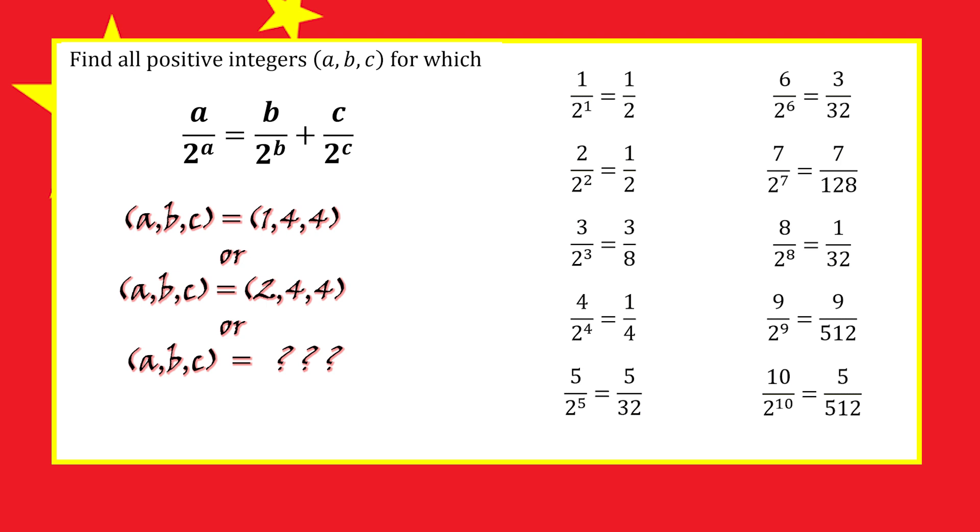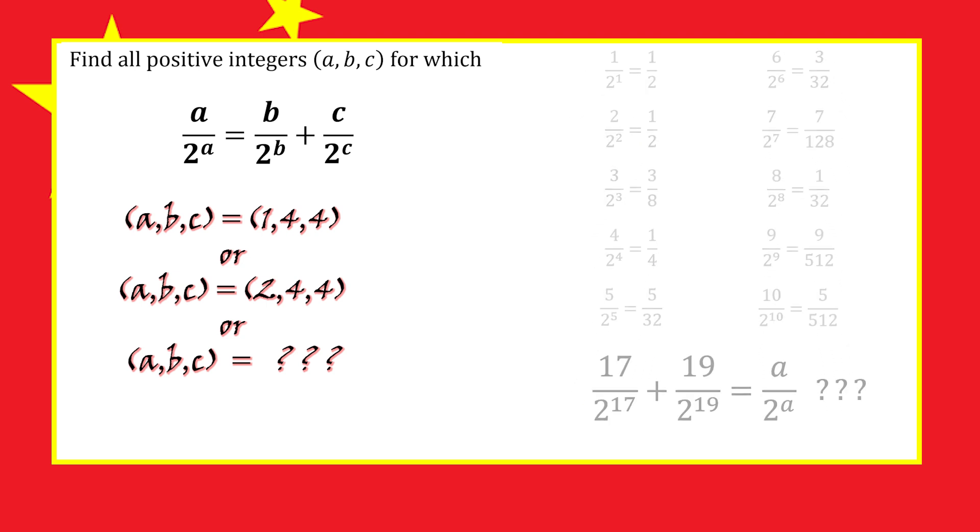How can we be sure there's not another triple if we kept listing more numbers? How do we know, for example, that 17 over 2 to the 17 plus 19 over 2 to the 19 doesn't give a number in the form a over 2 to the power a?